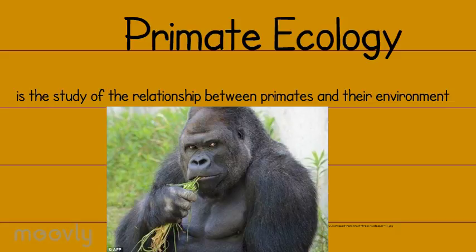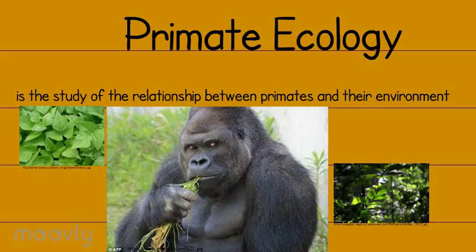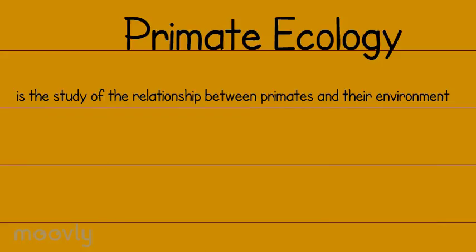This includes what they eat, as most primates are herbivores. But there are some primates that may be considered omnivores. Primates that demonstrate that they eat mainly leaves are called folivores. Such examples of folivores are the howler monkey and the gorilla.